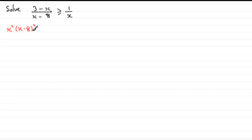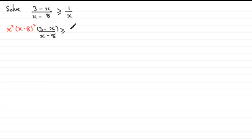We multiply the left-hand side — which is (3 minus x) over (x minus 8) — by x squared and (x minus 8) all squared. That's greater than or equal to the right-hand side, where we multiply 1 over x by x squared and (x minus 8) all squared.